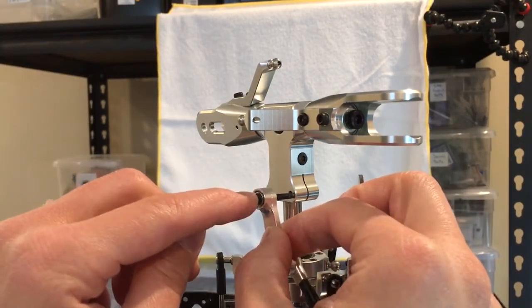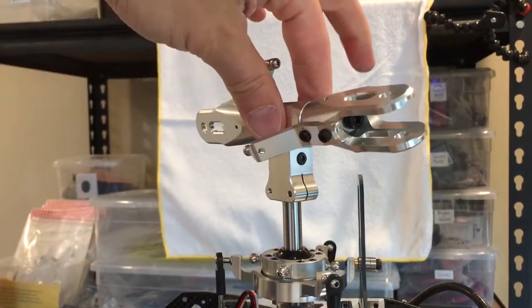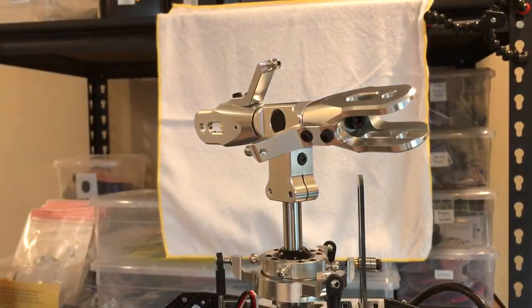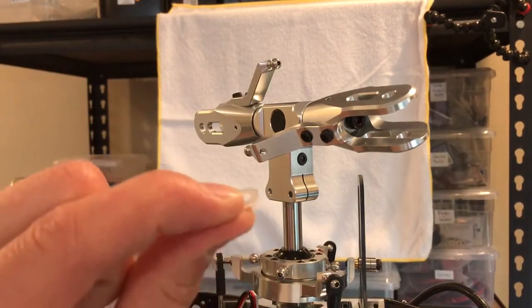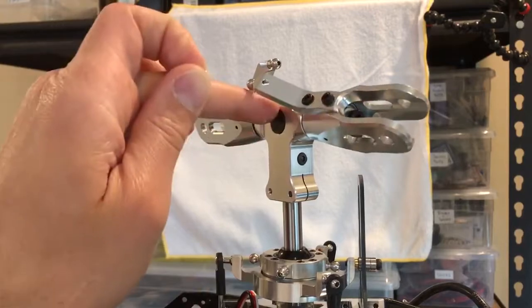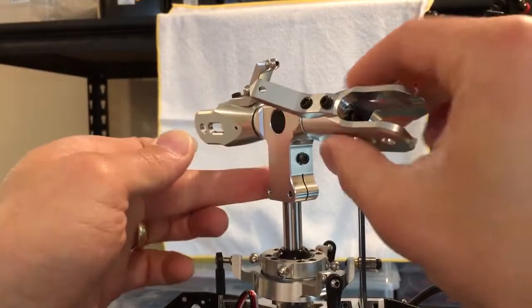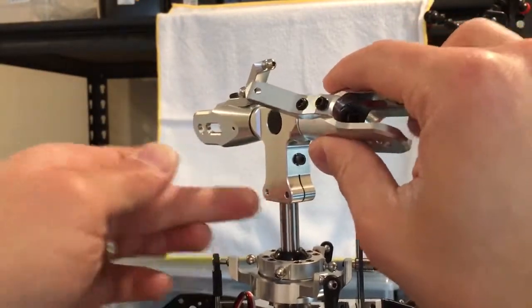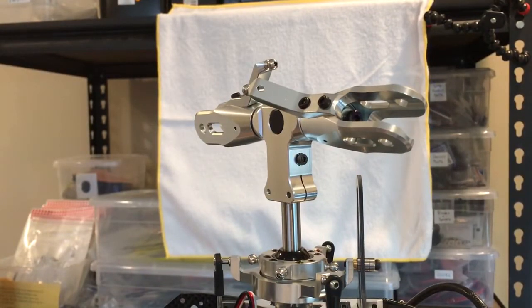And that's even before I tighten the washout arms. So the play is gone. The whole point here is that by using shims between the main shaft and the head, you can eliminate this up and down play very effectively. Thank you for watching.